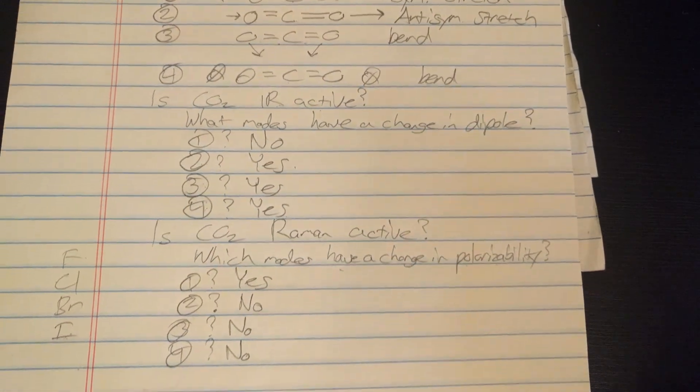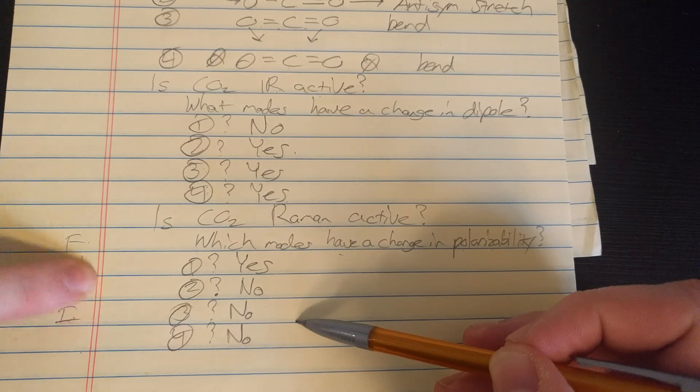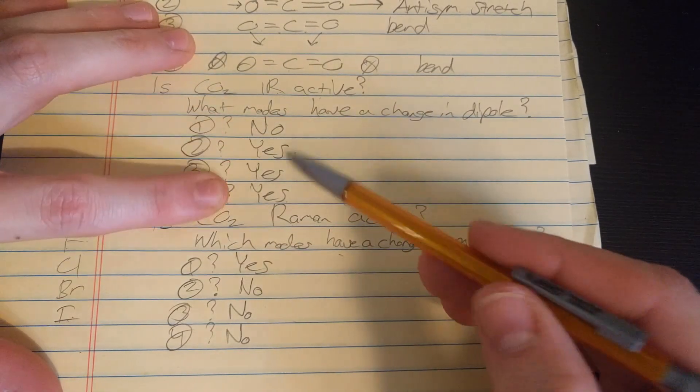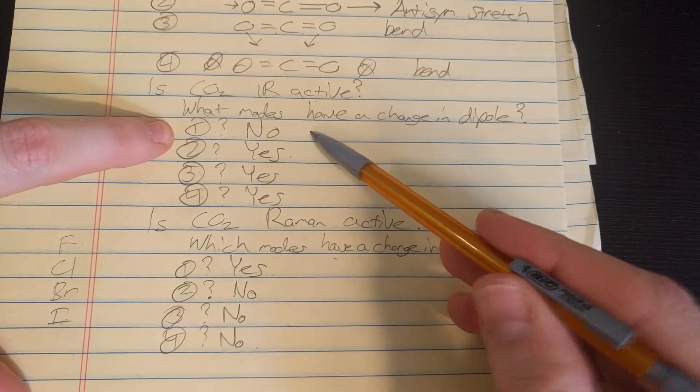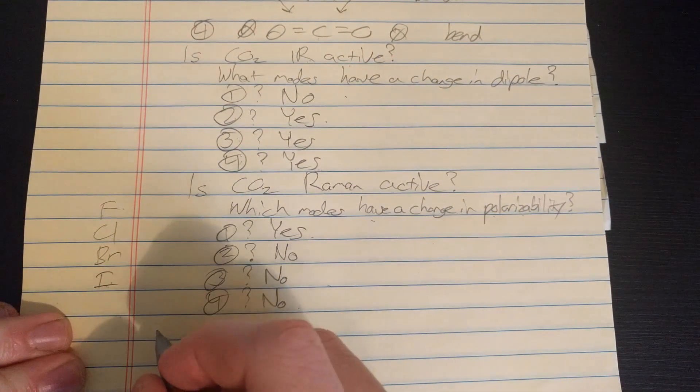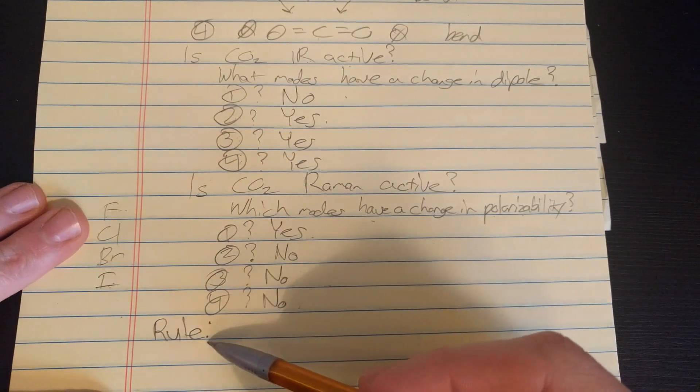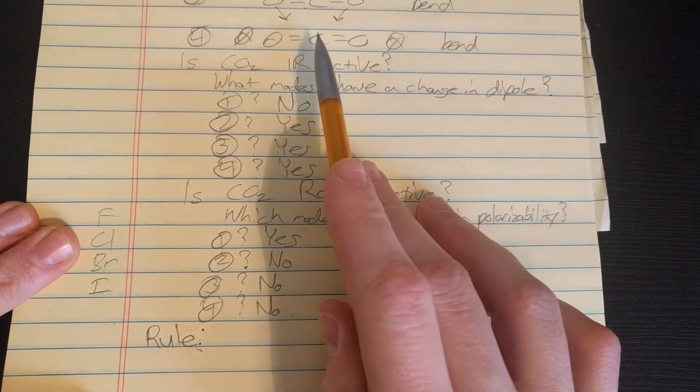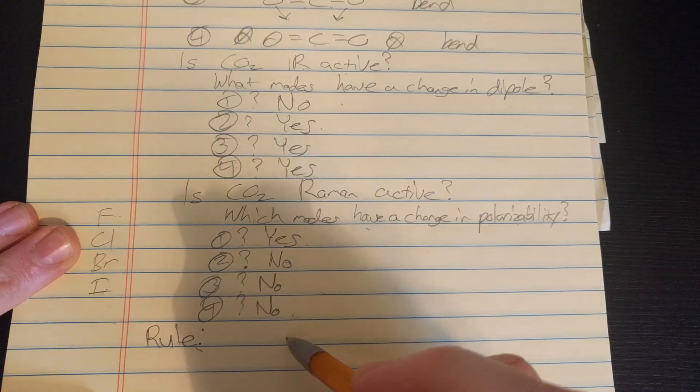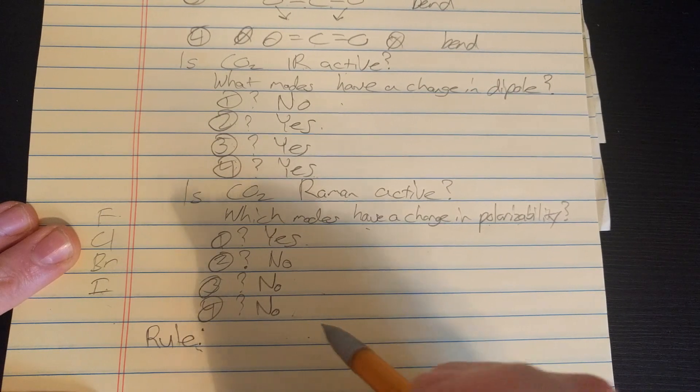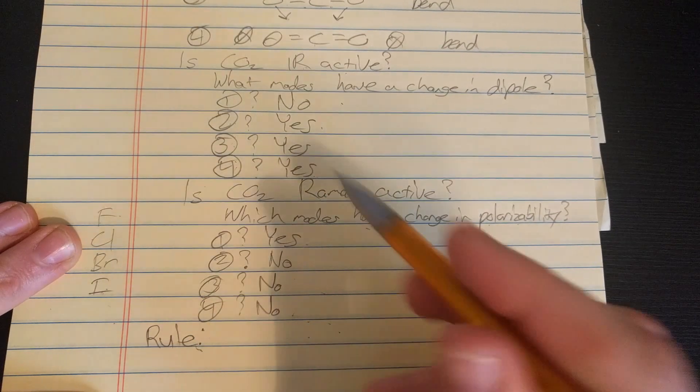And so notice something here. Notice that all the modes that are IR active are Raman inactive, and all the modes that are Raman active are IR inactive. So there's a general rule here. And that rule states that with molecules with inversion symmetry, any mode that is IR active is not going to be Raman active, and any mode that is Raman active is not going to be IR active.